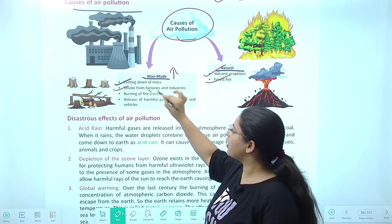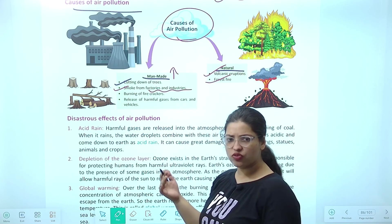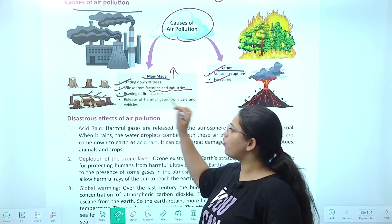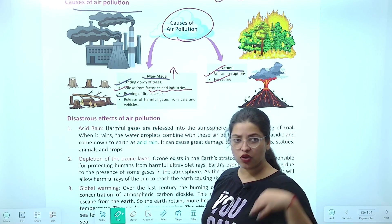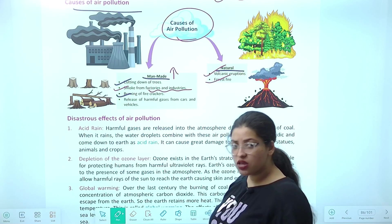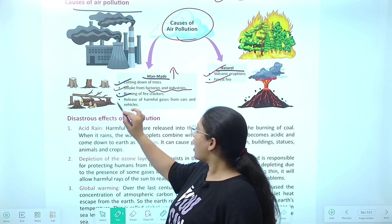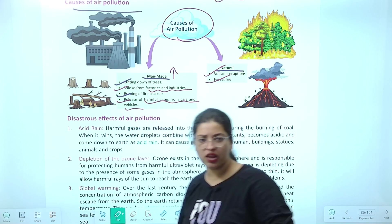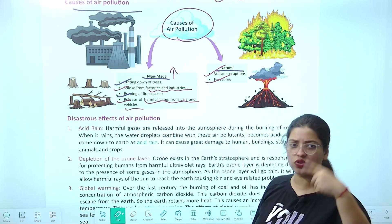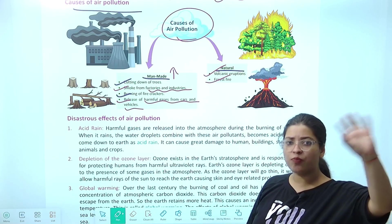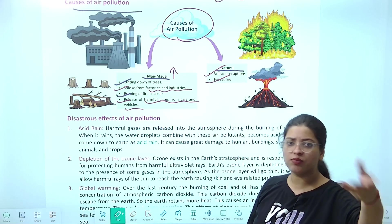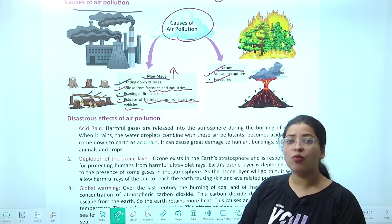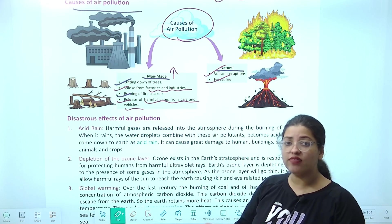Then smoke from factories and industries — itni saari chemicals ka use karte hain, smoke pollute kar raha hai. Burning of firecrackers — fire crackers burn karte hain, us mein bhi suit hota hai, smoke hota hai. And release of harmful gases from cars and vehicles — har kisi ko apni individual gaadi chahiye hoti hai. Carpooling ka system, public transport ka system use nahi karte, jisse pollution ka level us jagah intensify ho raha hai.